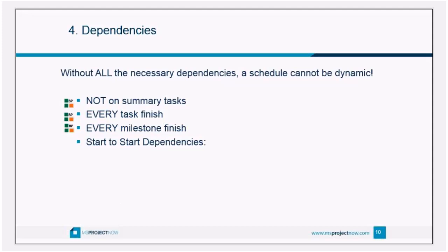You want to make sure that every finish date has a dependency on it. The only exception is summary tasks and the very last task in the schedule, which is typically a milestone that says 'project complete.' All finish dates of tasks and all finish dates of milestones must have a dependency. That's the only way you'll get a dynamic model of your project — if you want to see how a change in task two impacts task 30, your network has to be complete.